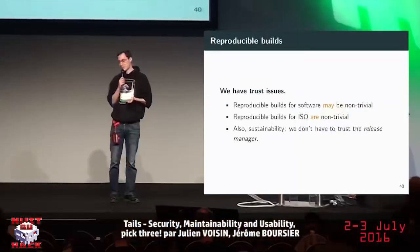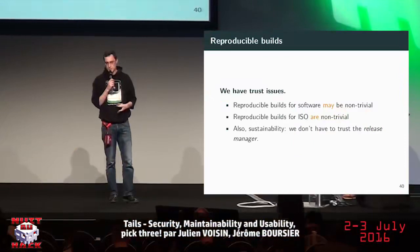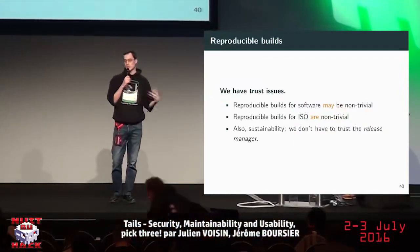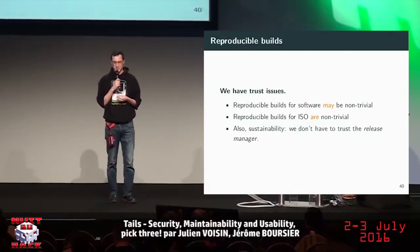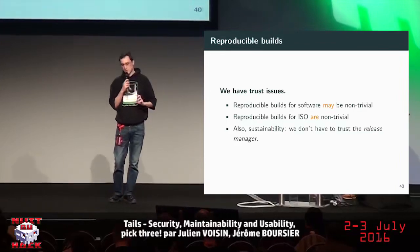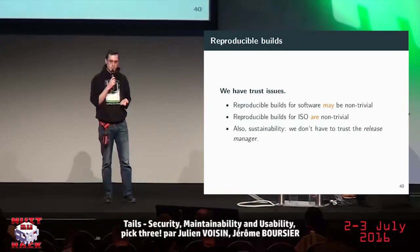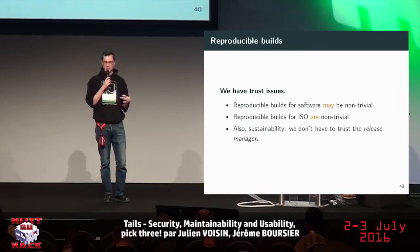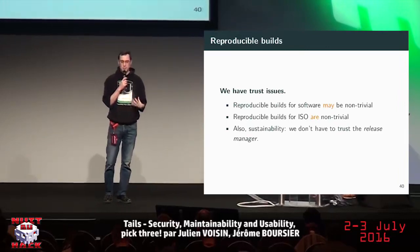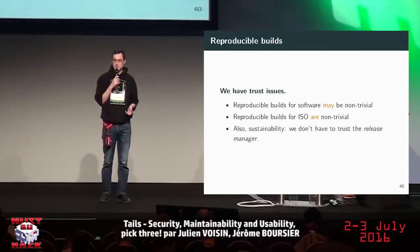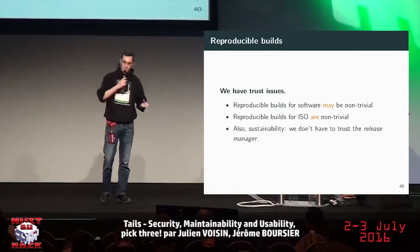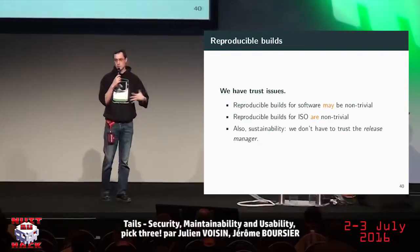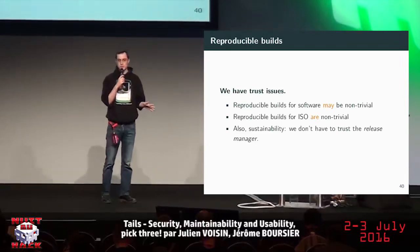We have trust issues — we don't trust many people but we welcome contributors, so it's tricky. Someone can come to contribute to Tails, but we don't necessarily trust them to do a release. That's why we're trying to do reproducible builds. It's non-trivial — maybe you've heard of the Debian project trying to do it, but it's really hard. We're trying to do it for a whole ISO. The positive side is that I can make a release and you don't have to trust me: you can download the sources, build it yourself, and compare with the release.